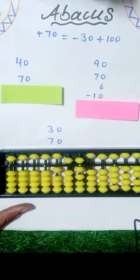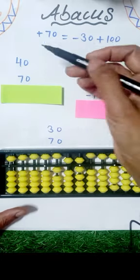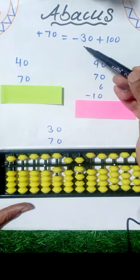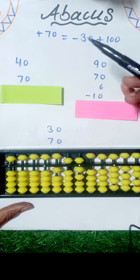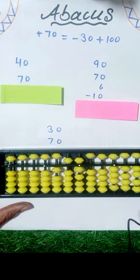Hello everyone, how are you? Today we will learn a new formula for abacus: plus 70 equals minus 30 plus 100. How do I use this? I will explain in the questions.